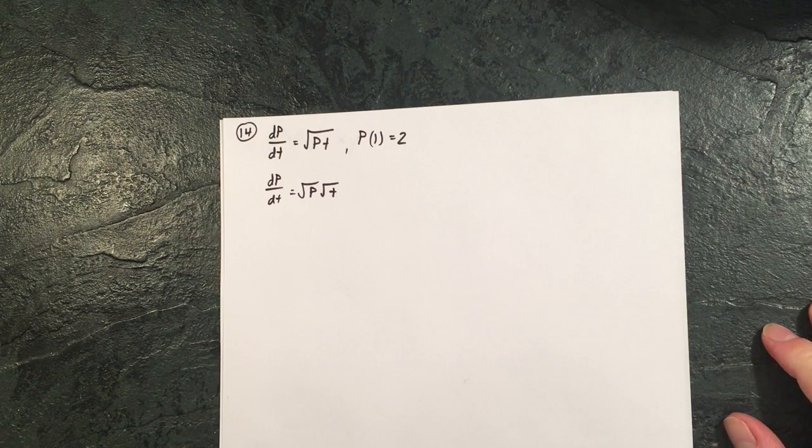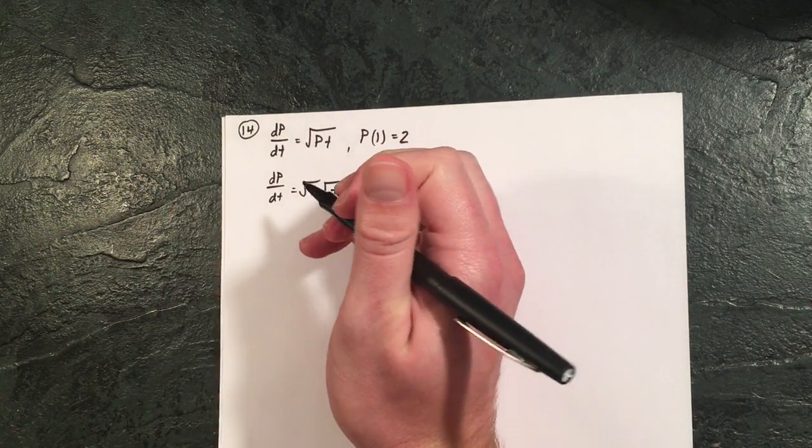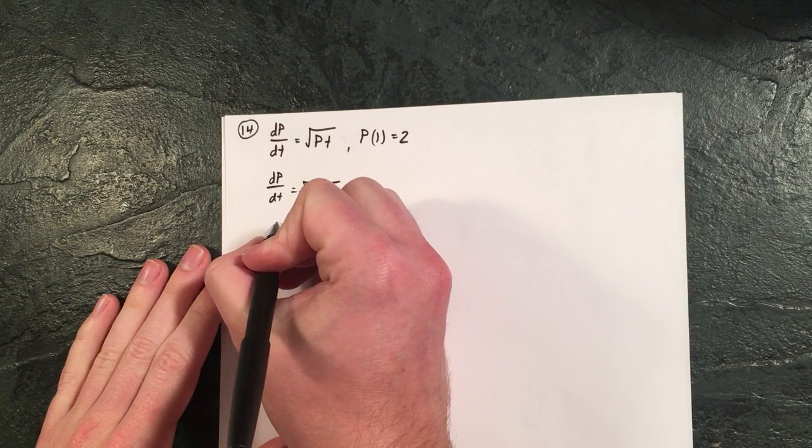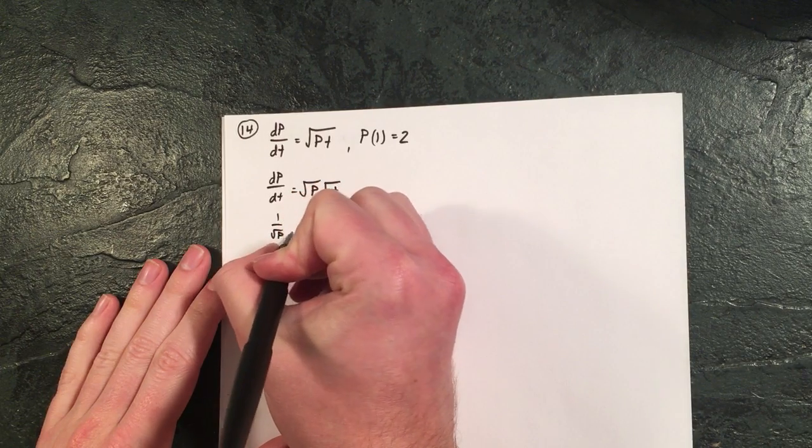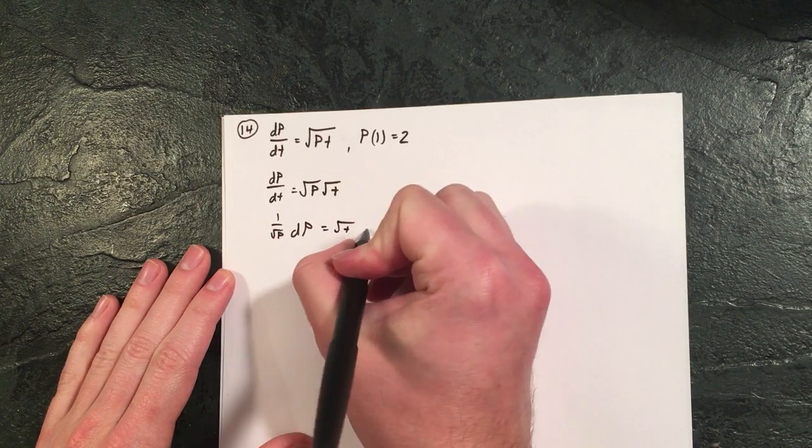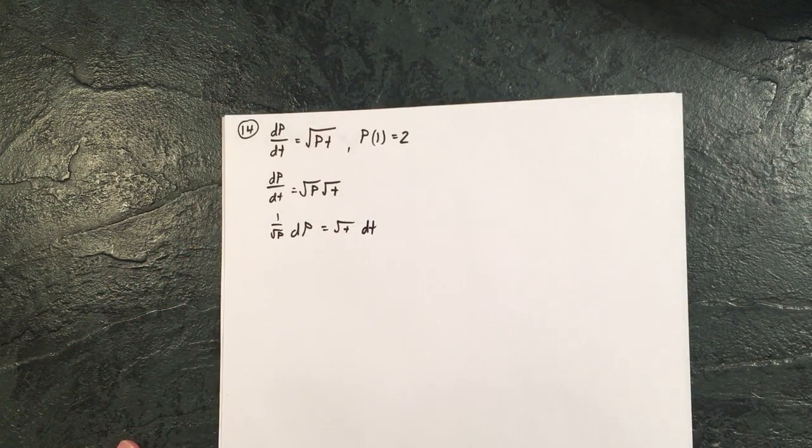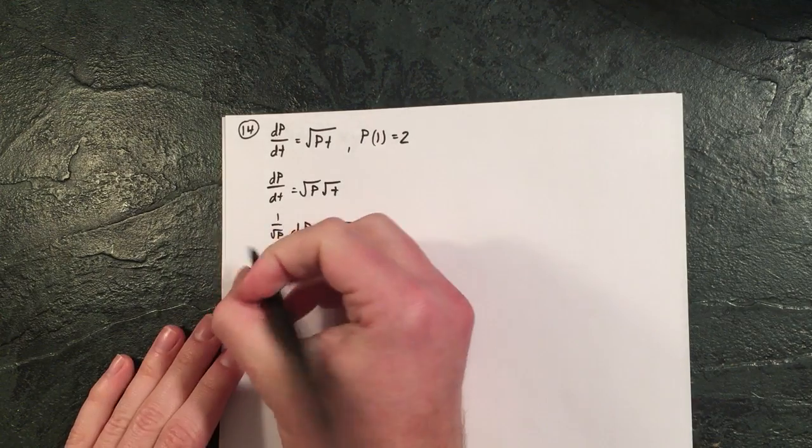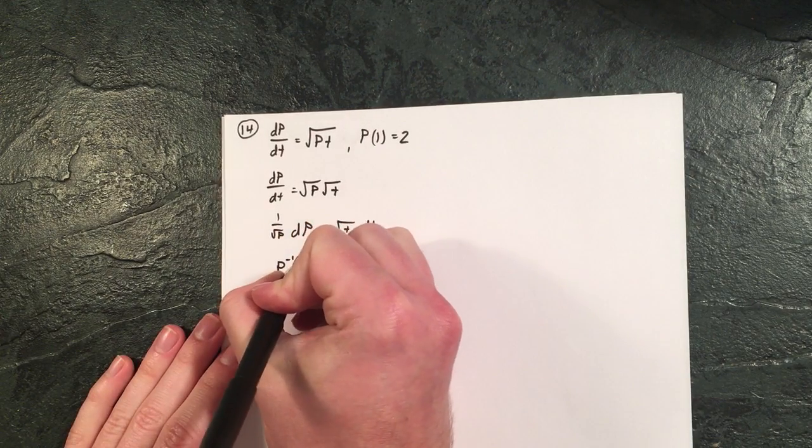Once we get it in this form, I think the rest of the question should hopefully go okay. So it's going to be 1 over the square root of p because we can divide that over, multiply the dt over, and maybe let's rewrite this so it's in a little bit nicer form.